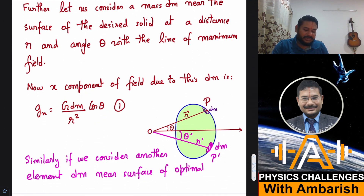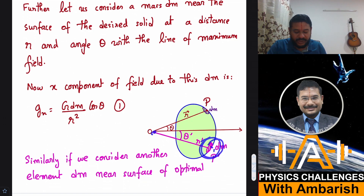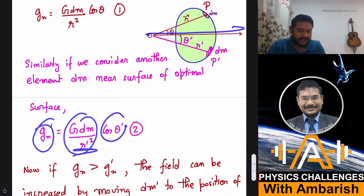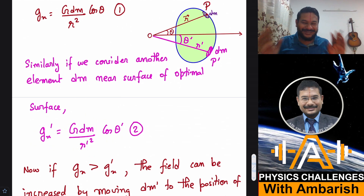Now suppose there is another element, also of mass dm, at a different location with angle θ′ and distance r′. By the same logic, the x-component of the field due to this second element at point O is G·dm/r′²·cosθ′.